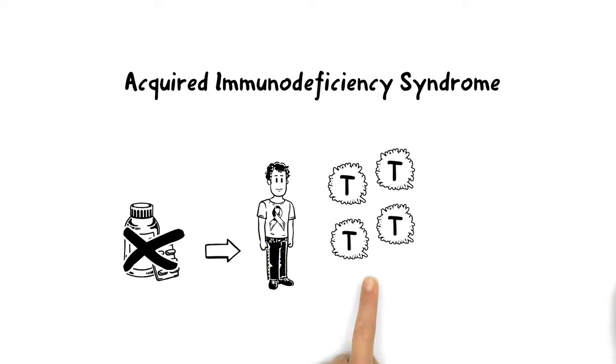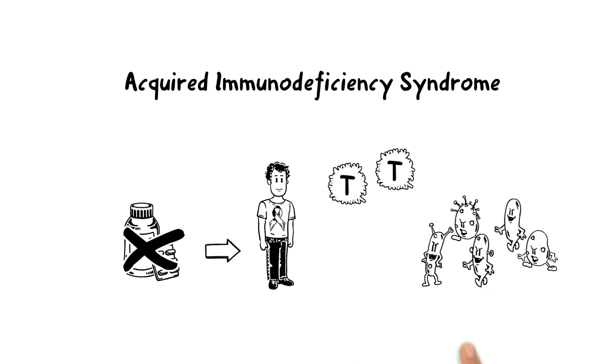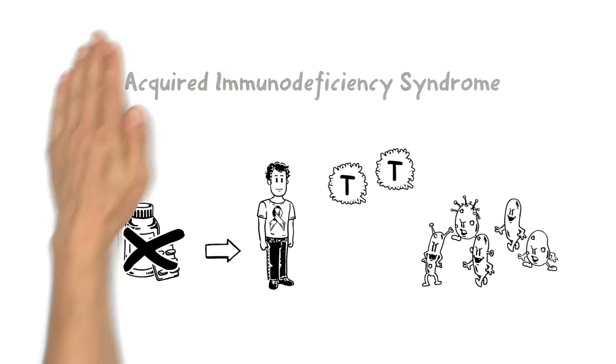By then, there aren't enough T-cells to fight off various infections and diseases. So it's not the virus directly, but the diseases that are eventually fatal.